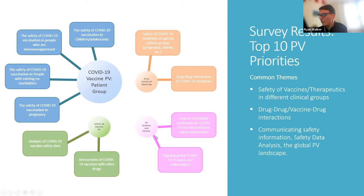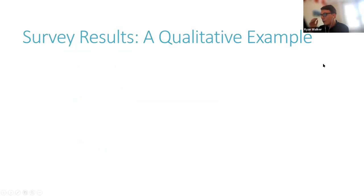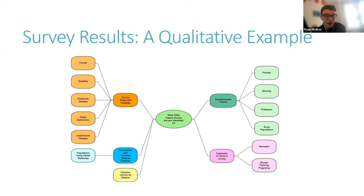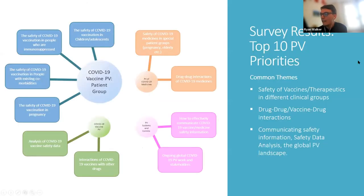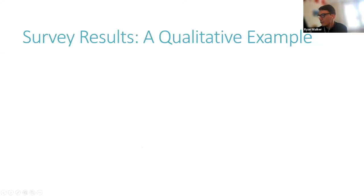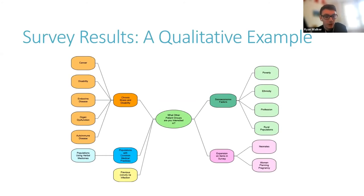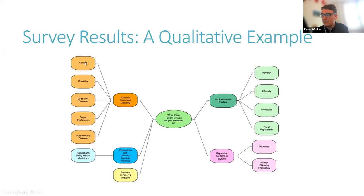In addition to gathering quantitative data by means of a Likert scale, we also asked for feedback through free text questions to gather qualitative data. There was an enormous amount of qualitative data generated. From our most common theme — COVID-19 vaccine pharmacovigilance according to patient group — when we look at COVID-19 vaccine safety in people with comorbidities, we see that chronic illness and disability was an area of real interest, especially in those with cancer, endocrine diseases, and autoimmune diseases.